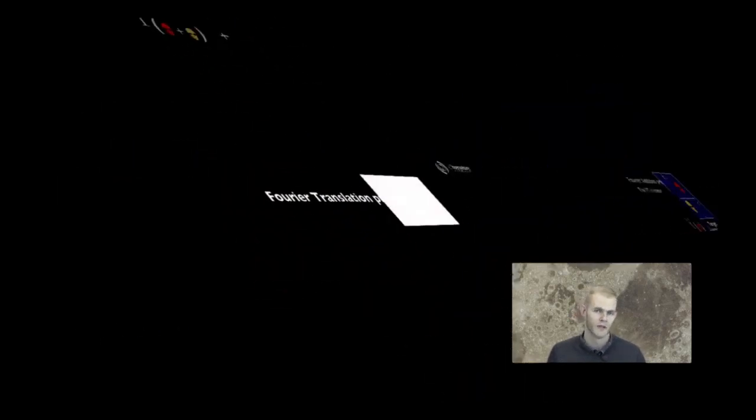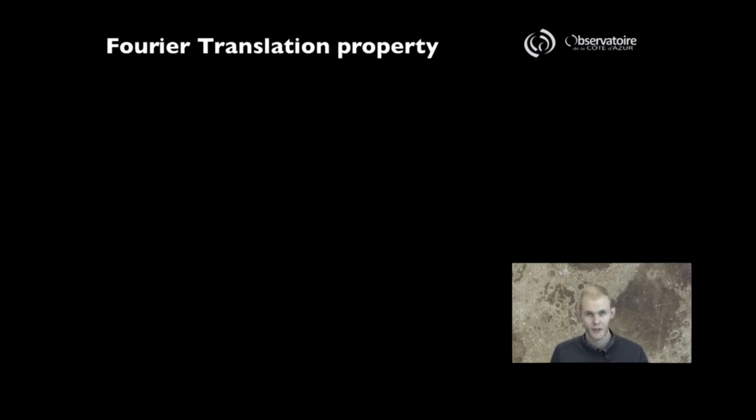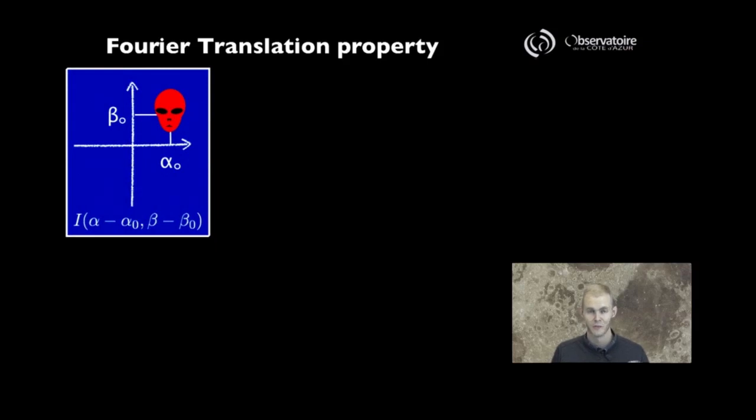A second important property is that of translation. If you've paid attention, the two alien faces were located away from the center defined by our local coordinate system. Here I'm simplifying, involving only one face, but deliberately placing it away from our local center of coordinates defined by the pointing of our interferometer.